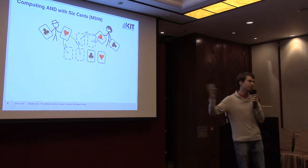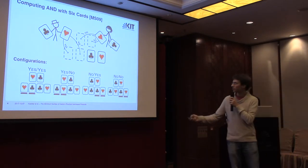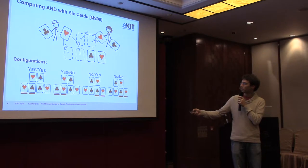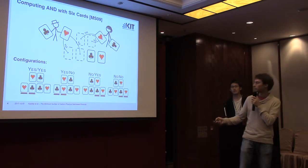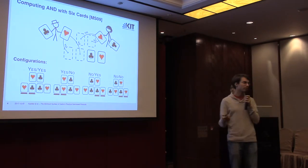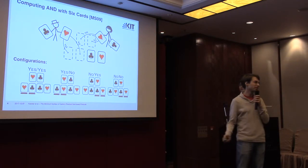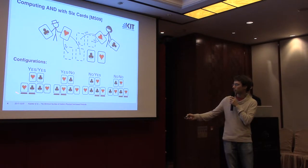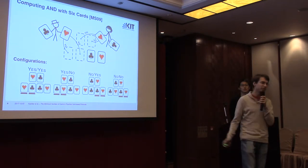Of course, these cards are face down, because otherwise we would already learn the inputs of both players. This puts us into one of the following configurations. When both players say yes, we have hearts-clubs, hearts-clubs, and clubs-hearts encoding a zero-bit. One short observation is that under Alice's side there's always the correct product: if both say yes, the output should be hearts-clubs encoding a one; otherwise zero.